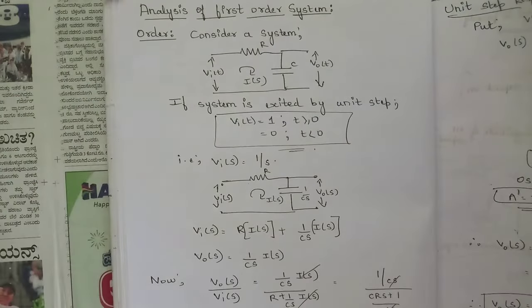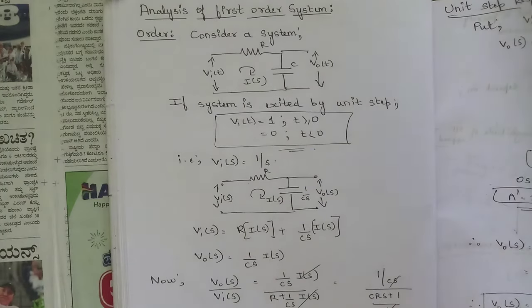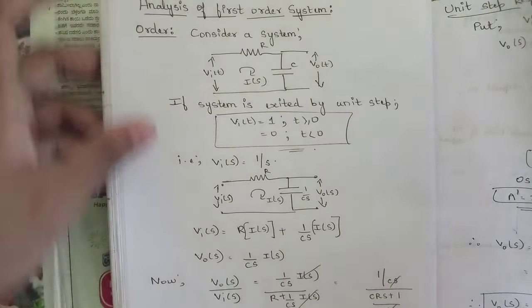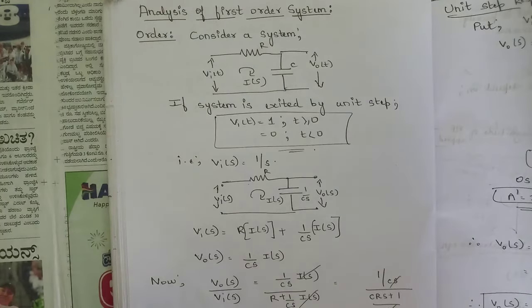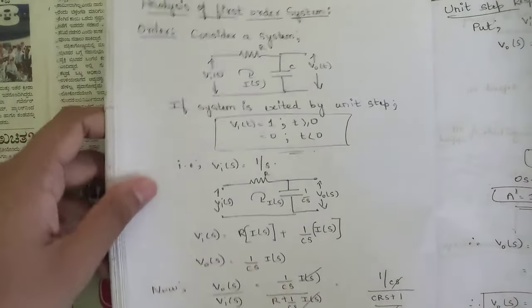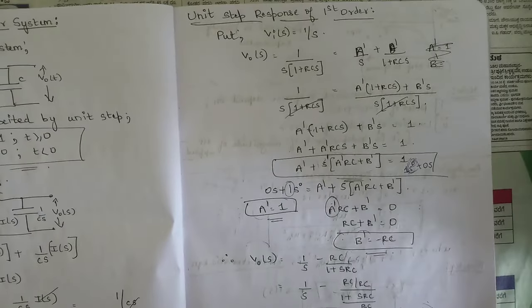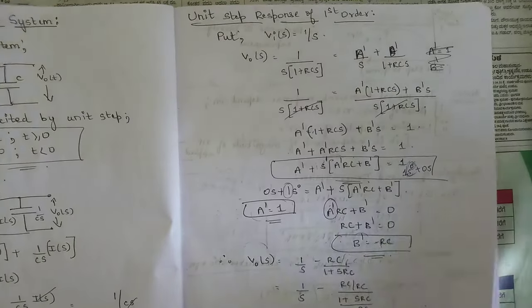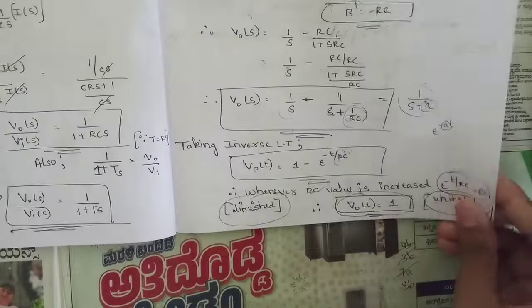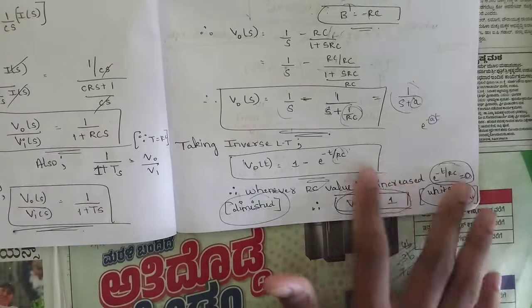The second part of this module is the analysis of the first order system. We discussed first order and second order systems, including unit step response obtained by applying the partial fraction method, which has already been covered in our channel.